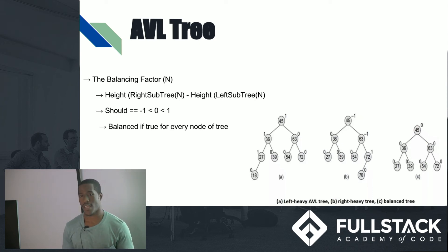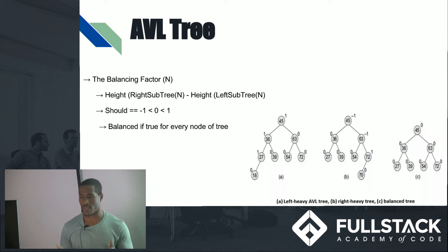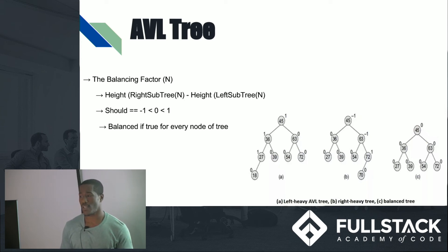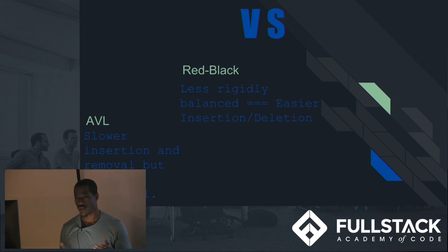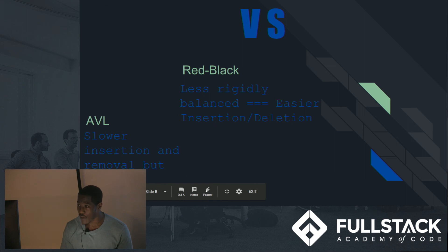Any time you insert or delete from the AVL tree, it's going to become unbalanced because the balancing factor is so rigid, so you need to refactor the tree on every insertion or deletion — which isn't great for those operations. That's why the red-black tree is better for insertion and deletion. But with an AVL tree, because it's so rigidly balanced, it's much better for data retrieval. A red-black tree, not being as rigid, can become slightly unbalanced so you're not reaping the full benefits. But red-black trees are better for general use cases.